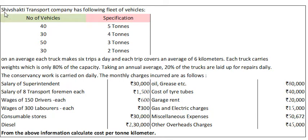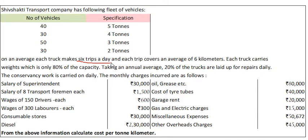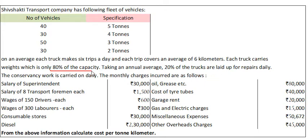First of all, let us understand the question. We have information of Shivsakti Transport Company having a fleet of vehicles: 40 vehicles with 5 tons capacity, 30 vehicles with 4 tons capacity, 50 vehicles with 3 tons capacity, and 30 vehicles with 2 tons capacity. On an average, each truck makes 6 trips a day and each trip covers 6 km. Each truck carries 80% of its capacity.